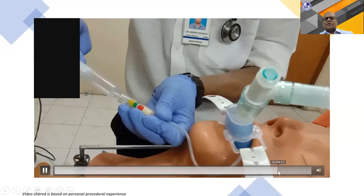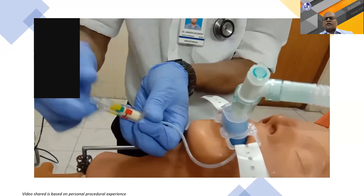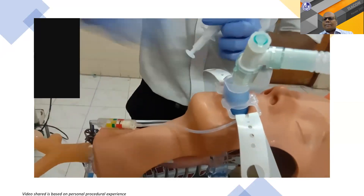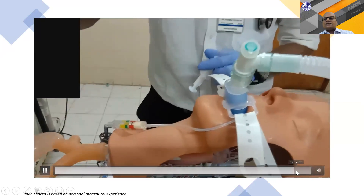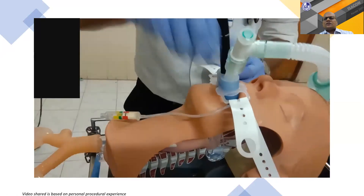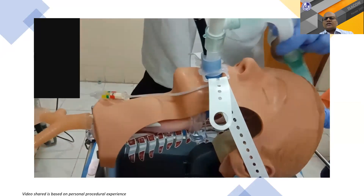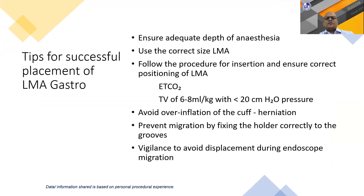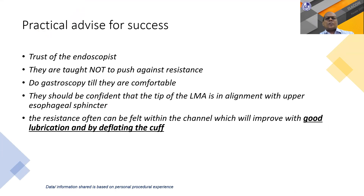Deliberate over-inflation of the cuff demonstrates significant resistance—the scope does not move. This reinforces the message: never over-inflate the cuff. Tips for successful placement: ensure a correctly placed LMA, keep the cuff pressure in the neutral 40 to 60 cmH2O range, and build endoscopist trust. Endoscopists are taught not to push against resistance, so start with gastroscopy until they are comfortable and confident that the LMA tip is in alignment.